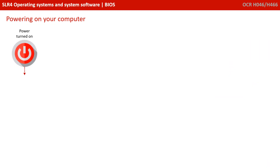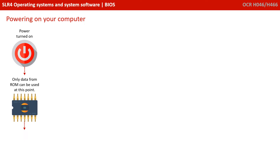What actually happens the moment your computer turns on, right up to the point where you are in your operating system and have control? Well, let's step through and have a look. First of all, the only place where instructions can be fetched from initially is the ROM, as this is read-only memory and has the set of initial startup instructions written into it at the manufacturing stage. Nothing exists in RAM at this point, and the computer isn't even aware that your hard drive exists.